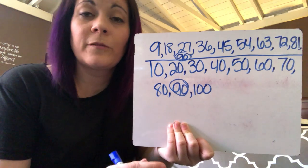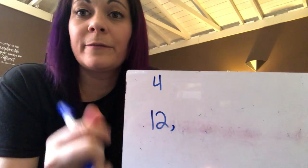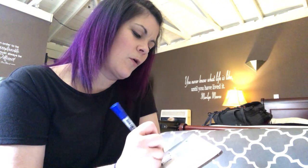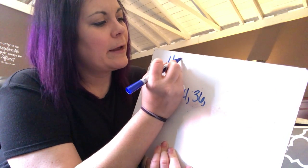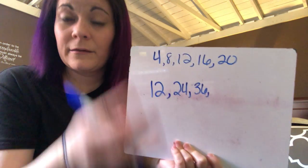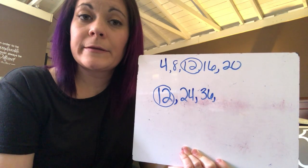One more example: LCM of 4 and 12. List multiples of 12: 12, 24, 36... I already know 12 is a multiple of 4, so 12 is the LCM right away. To verify: multiples of 4 are 4, 8, 12, 16, 20 — and yes, 12 appears in both lists. That's your Least Common Multiple. Thanks for watching!